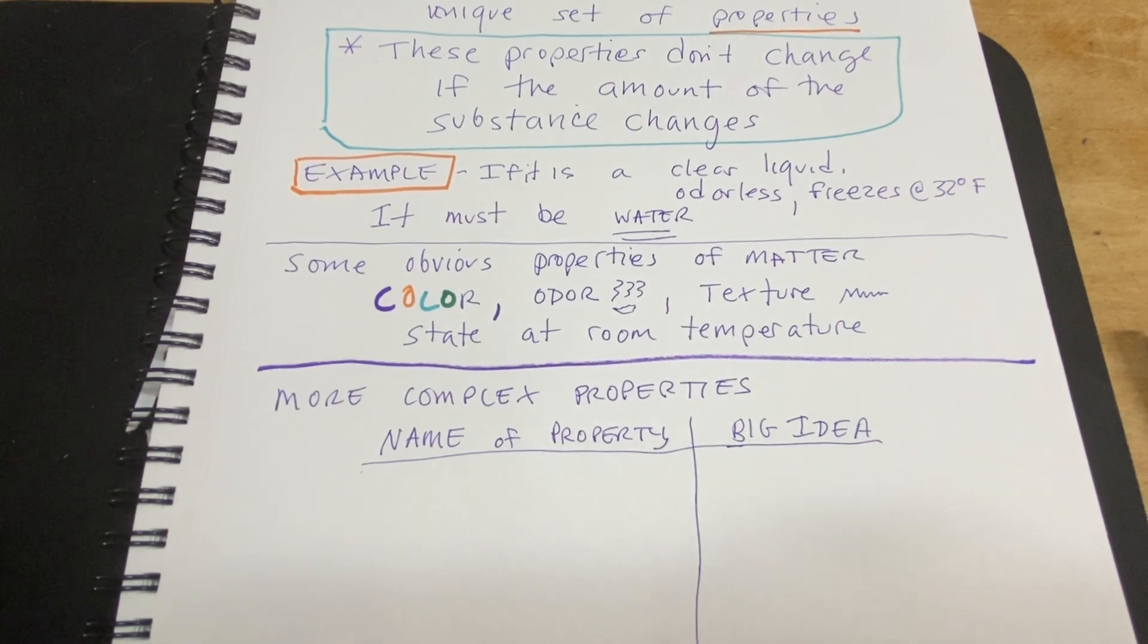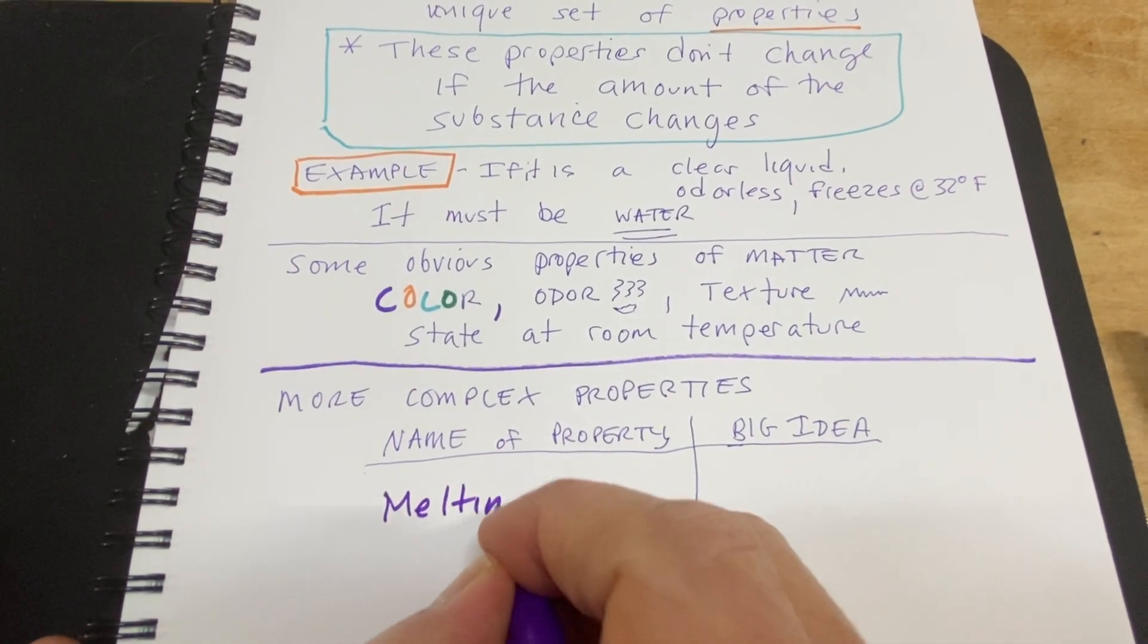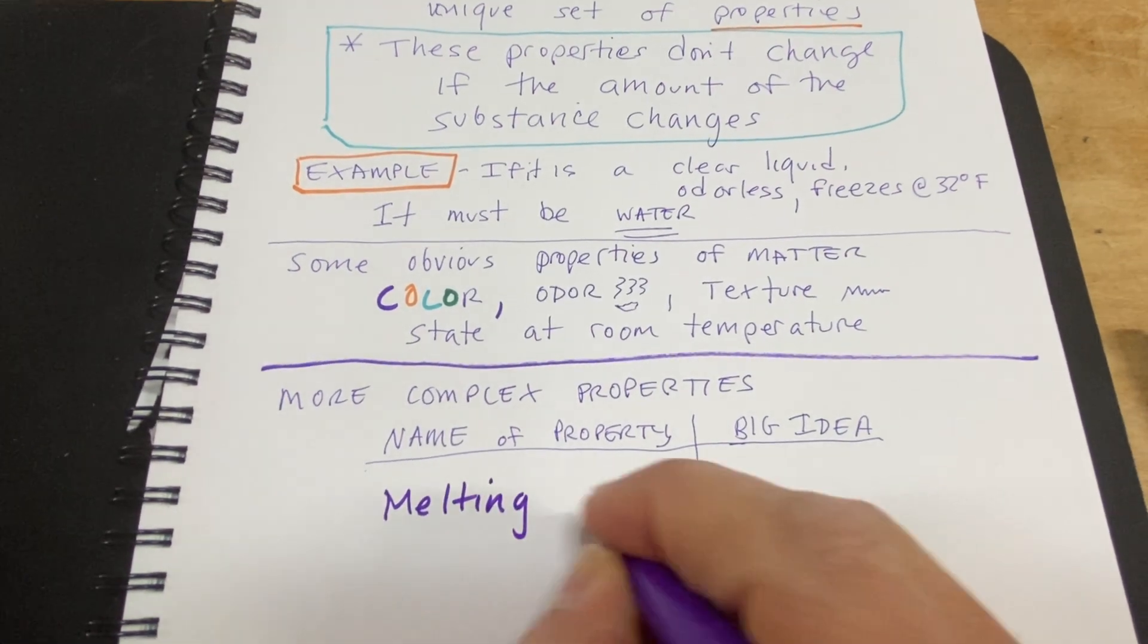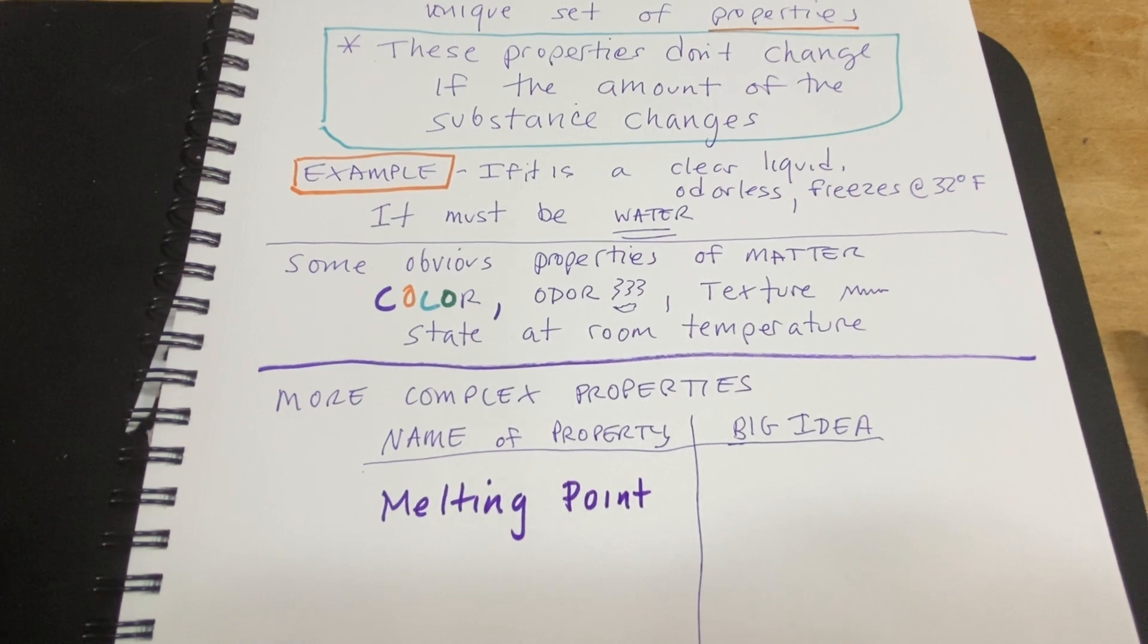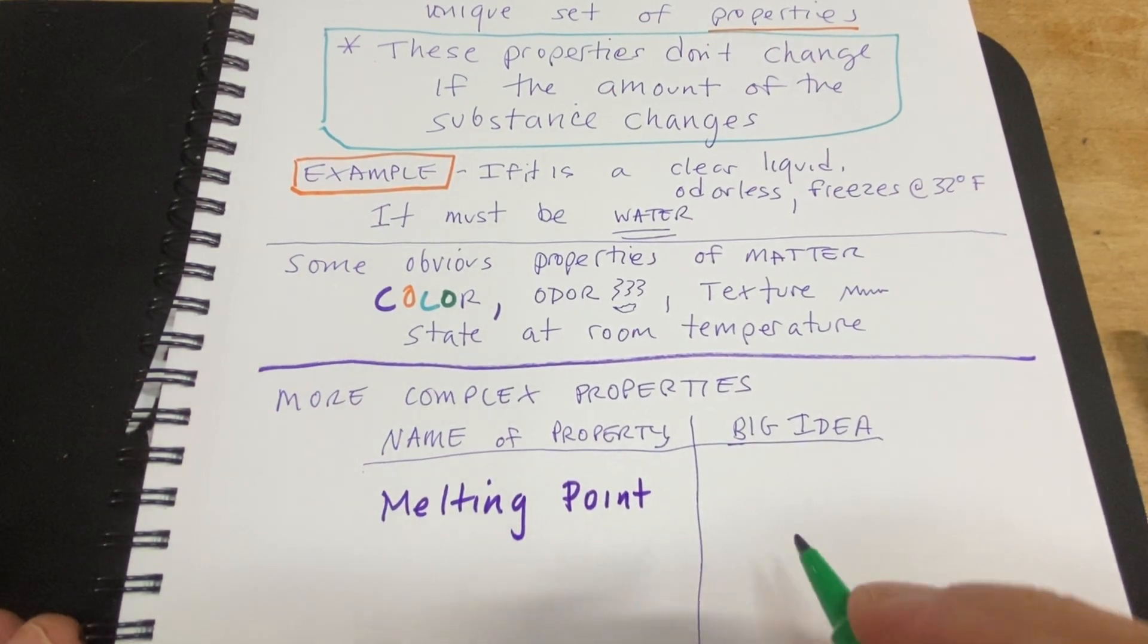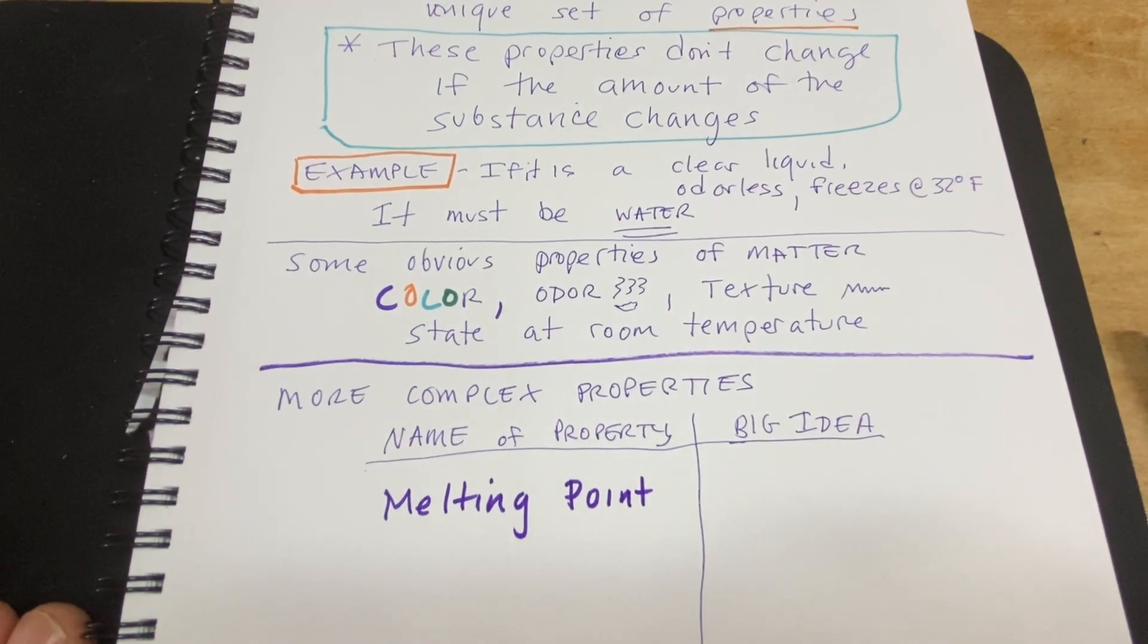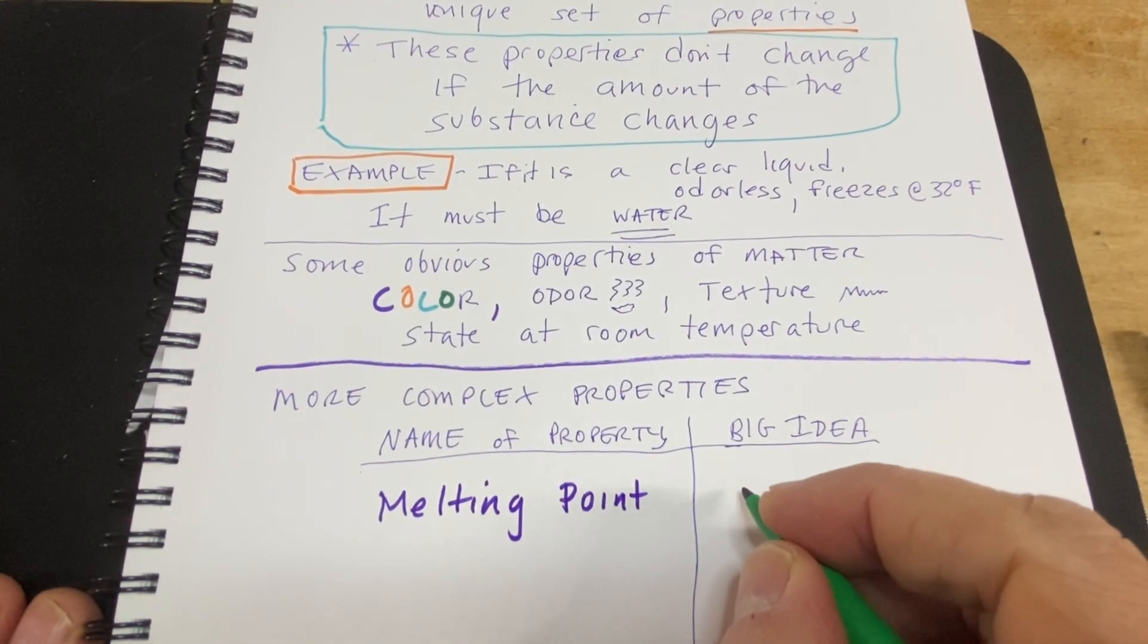This is the idea of melting point. We saw earlier today that we can heat something up, and if we can get it to its melting point, it will melt. But if we can't heat it up to that temperature, that particular temperature, it stays in the state of a solid.